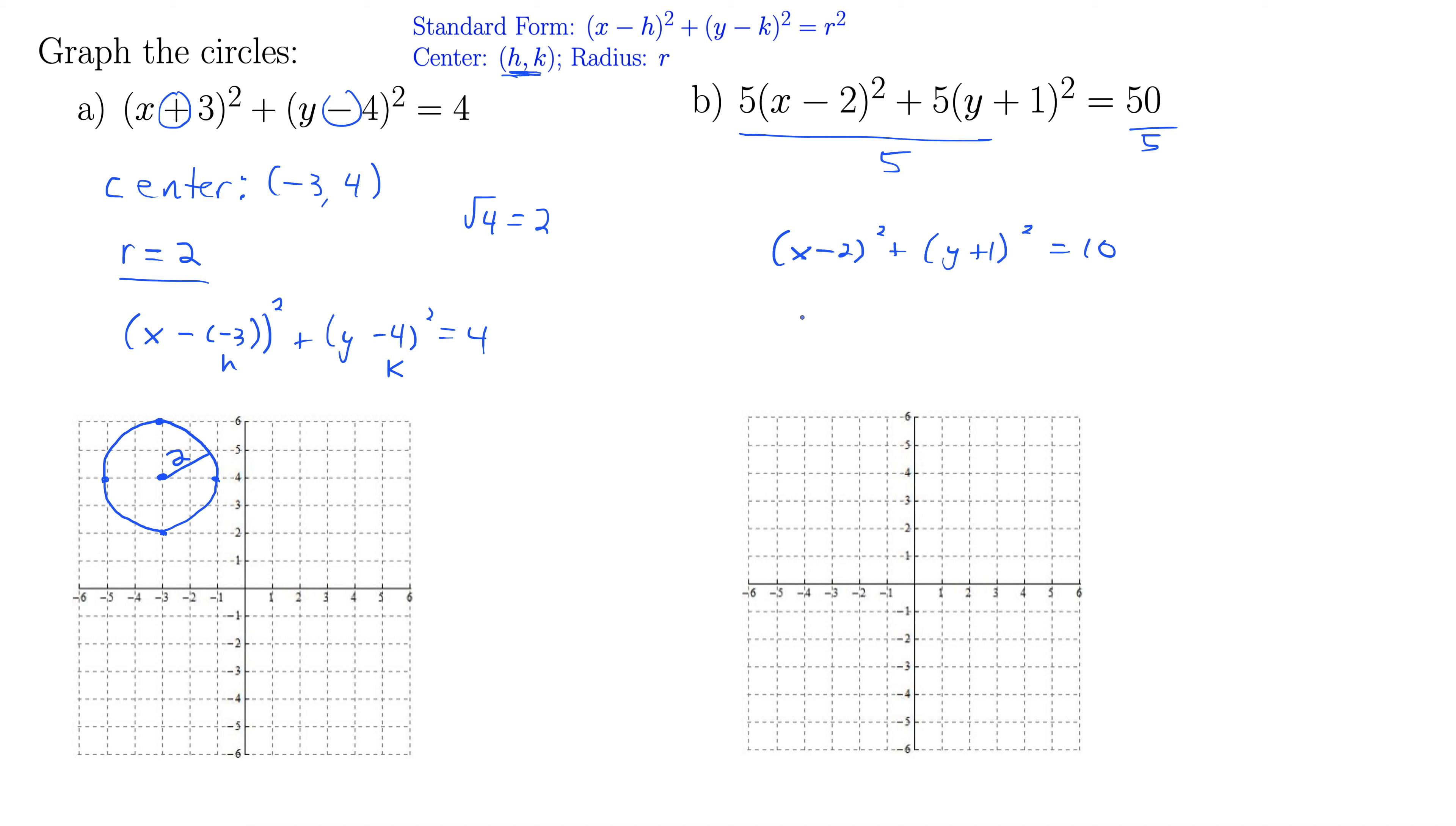And now we have our circle with the center of (2, -1). Remember we changed the signs on these values inside the parentheses there to get our h and k just right for our center.